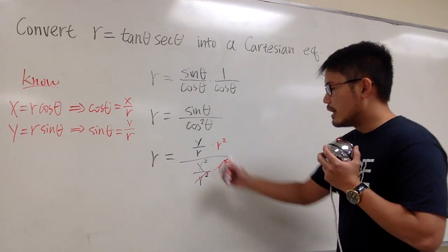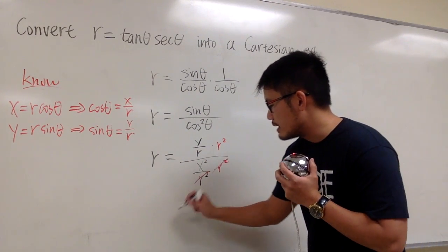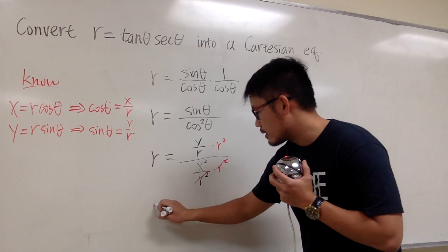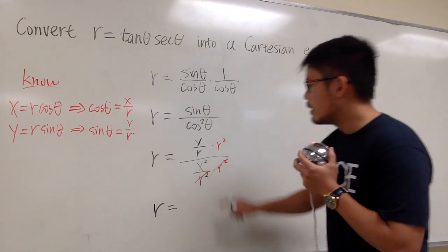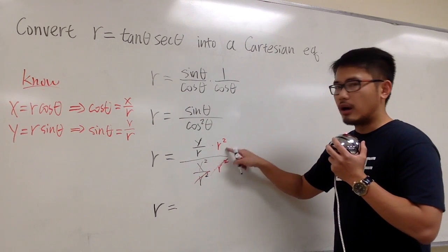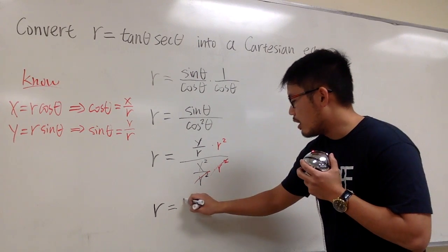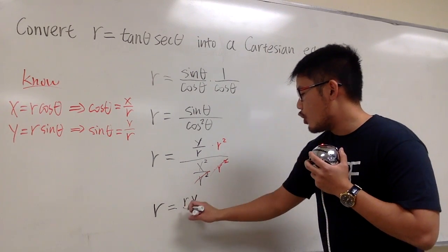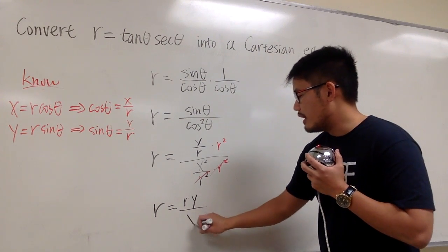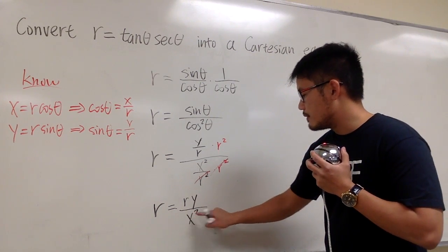And you see, r squared will cancel. And then we can look at this equation now as r equals y over r times r squared. One of the r's cancel out each other. So we have just r times y over, for the bottom, we just have x squared.